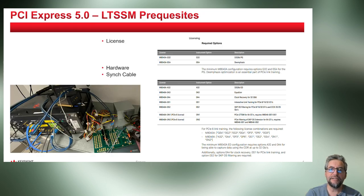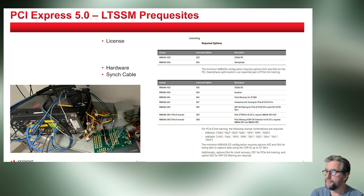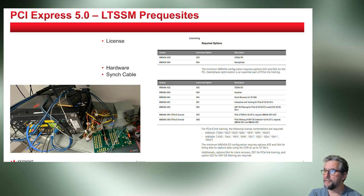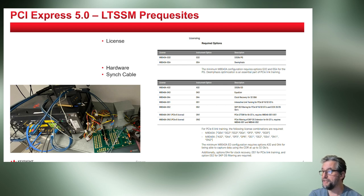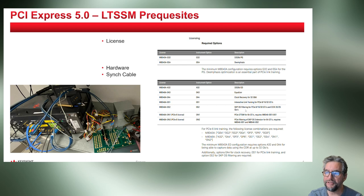Before you get started, you need to verify that you have the correct licenses installed. The guide talks about the absolute minimum requirements to do link training: option G32 and G4, the 32GB in de-emphasis. However, I would strongly recommend you consider the options A32 and OA3 — those are pretty much required to do any of the debugging as well. If you're doing Gen 6, there is separate licensing for that.